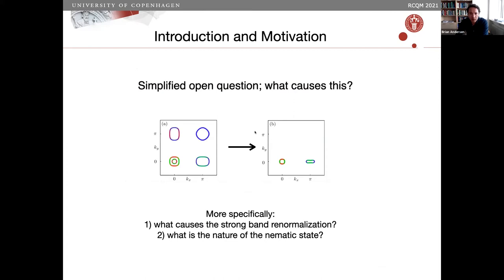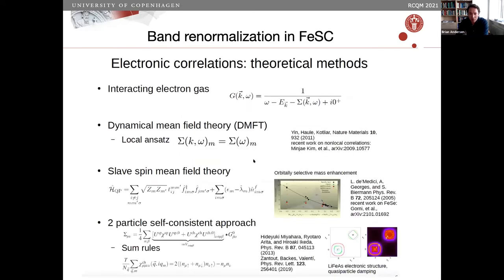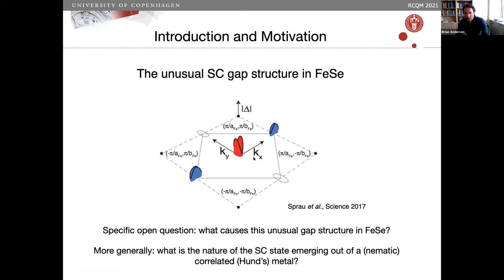In a nutshell, the question is how do we get from the DFT band structure to what's observed, and to answer this I will address strong band renormalization and the nature of the nematic state. Of course we're not the first — this is by far not a complete list. There are many works since the very beginning of these materials dedicated to obtaining better models incorporating strong correlations and their feedback on the band structure. What I'll focus on is a particular couple of versions, and as we'll see, the second large motivating aspect is this very unusual superconducting gap structure.